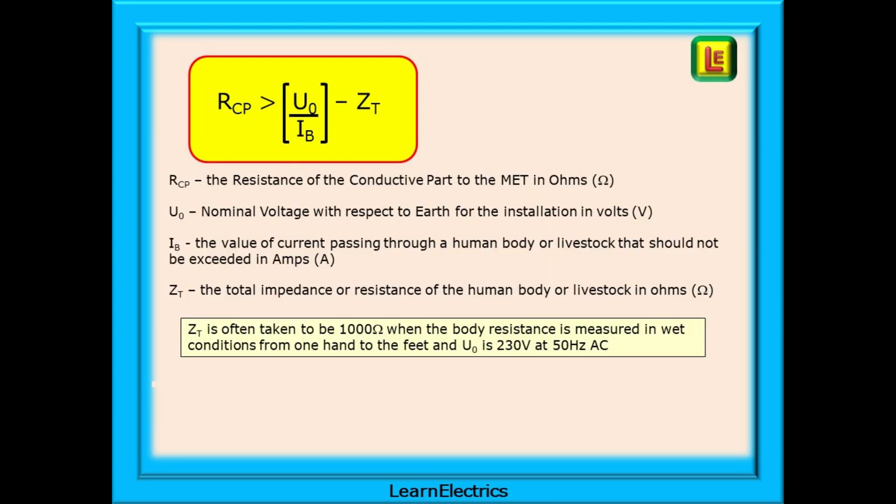If we break this formula down, we realize that this is just Ohm's law using different letters. RCP is the minimum resistance between the conductive part and the main earth terminal in Ohms. U0 is the nominal line voltage with respect to earth for the installation in volts. And IB is the value of the shock current that is passing through a human body or livestock that should not be exceeded in amps. And the designer will decide what this maximum figure is.